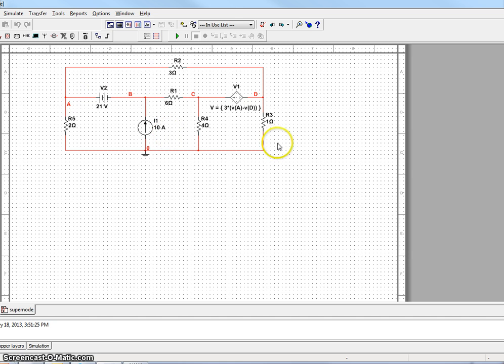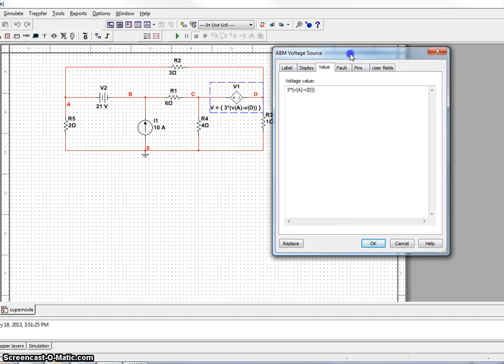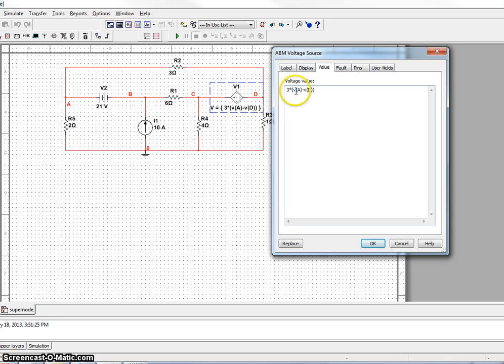On the dependent source, you can change the value of the dependent source. Here, dependent source was 3VX, and the voltage across R2 was 3VX. And in NI MultiSIM, we write that by saying 3 times voltage at node A minus voltage at node D. So 3VA minus VD.